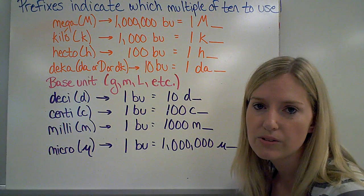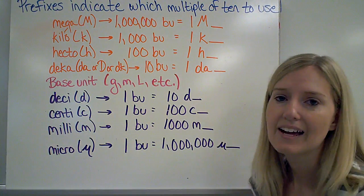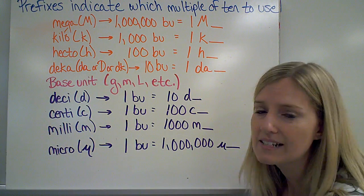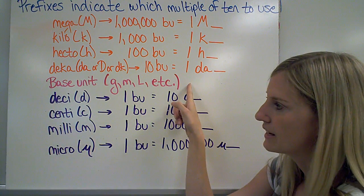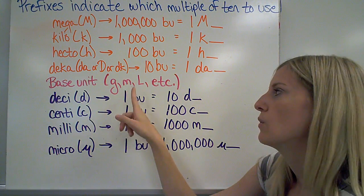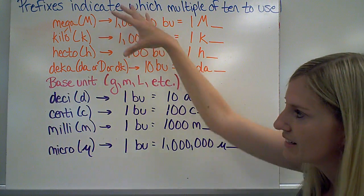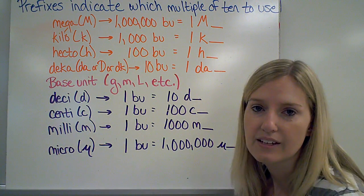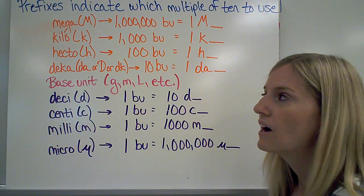In front of the base unit, I can put a prefix. That's going to tell me which multiple of 10 I need to use. If I look at this chart, it gives me some common examples of prefixes used in the metric system. Notice that in the middle I have base units like on the previous slide — this would just be one gram, one meter, or one liter, etc.